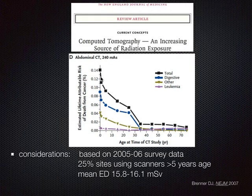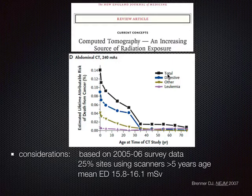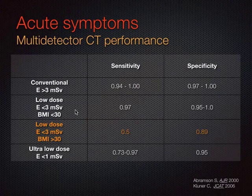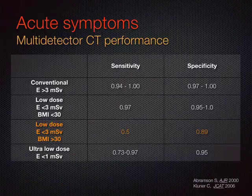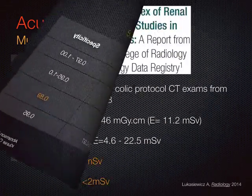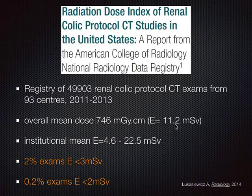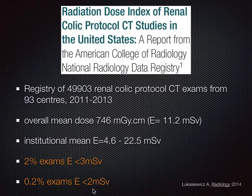There's data showing we can deliver small radiation doses in CT and still maintain sensitivity and specificity. A pooled analysis of almost 50,000 renal colic CTs from 93 centers found the overall mean dose was quite high—only 2% of exams were performed at what we'd consider low dose, and 0.2% at approaching ultra-low dose. So there's a huge margin for improvement. Limitations relate to patient obesity, institution-specific preferences, and machine-based limitations, but we have a lot of room for improvement.